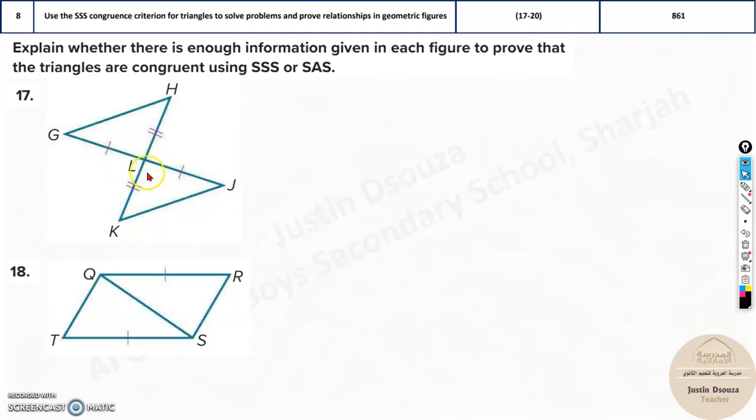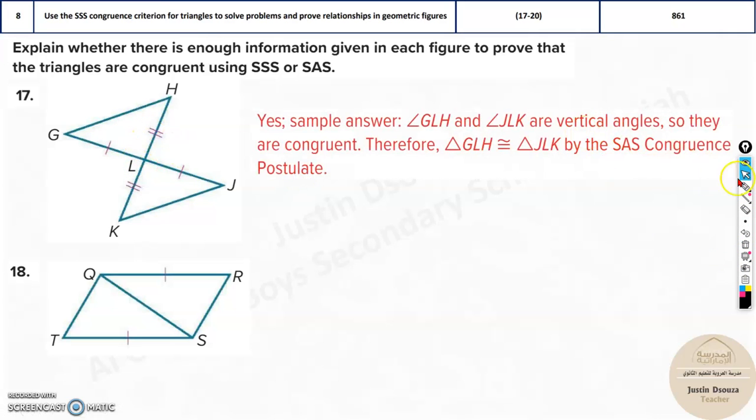Triangle GHL and triangle KJL. Over here, you can see two sides are equal. This and this is equal, this and this is equal. And what about this angle? They have not given anything, but we know from vertical angle theorem this angle will be equal. So that is congruent. That is SAS. We know from SAS congruency postulate that both triangles are congruent because this angle is a vertical angle.